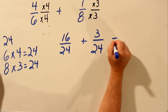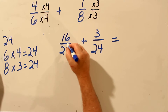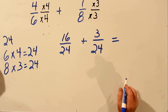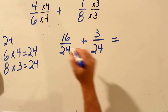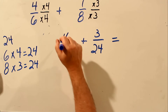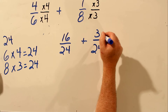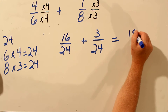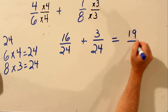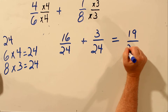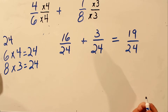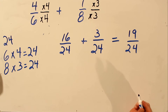And now we can add these fractions because the bottom number is the same. So to add the fractions, you add the top numbers across — 16 plus 3 is 19 — and you keep the bottom number the same. So the answer is 19 over 24.